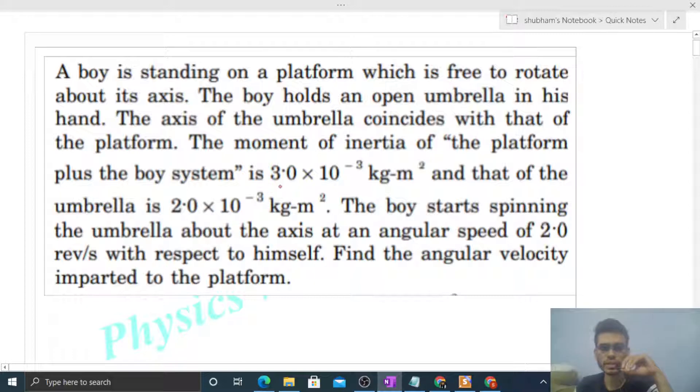The moment of inertia of the platform plus the boy system is 3 into 10 raised to the power minus 3 kilogram meter square, and that of the umbrella is 2 into 10 raised to the power minus 3. The boy starts spinning the umbrella about the axis at an angular speed of 2 revolutions per second with respect to himself. Find the angular velocity imparted to the platform.